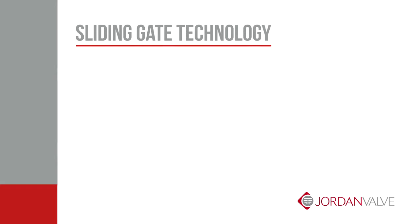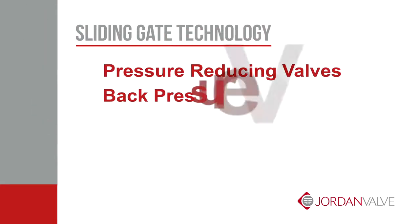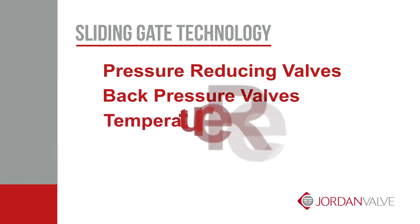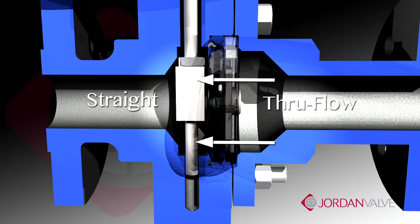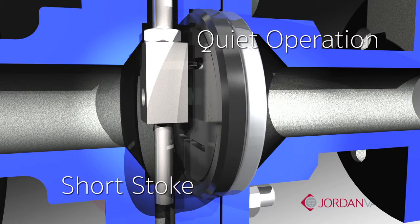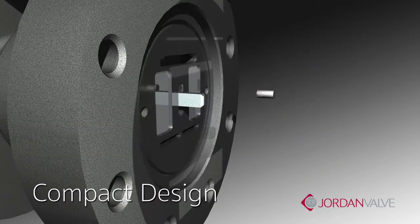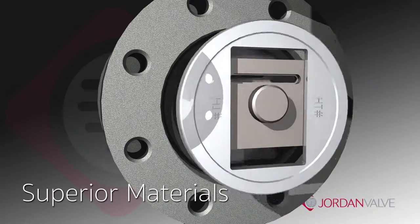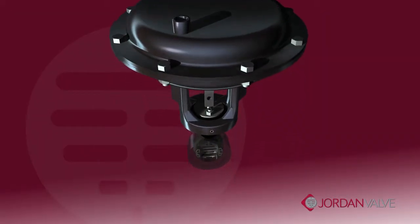The sliding seat design can be employed in many Jordan pressure reducing valves, back pressure valves, temperature regulators and control valves. With features like straight through flow, short stroke and quiet operation, disc plate overlap, and compact design consisting of superior materials and simple engineering, this makes an excellent choice for most applications.